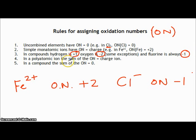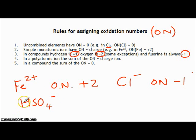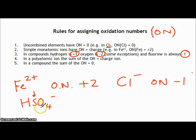In a polyatomic ion, the sum of all the oxidation numbers must equal the charge on the ion. For instance, if we have hydrogen sulfate, HSO₄⁻ — that's a polyatomic ion — if we add up the oxidation numbers of hydrogen, sulfur, and oxygen, they must equal minus one. Let's work out what the oxidation number of sulfur is.